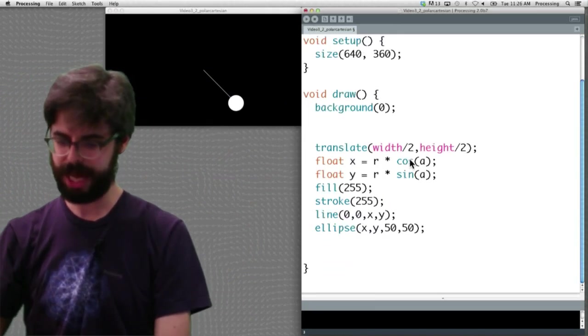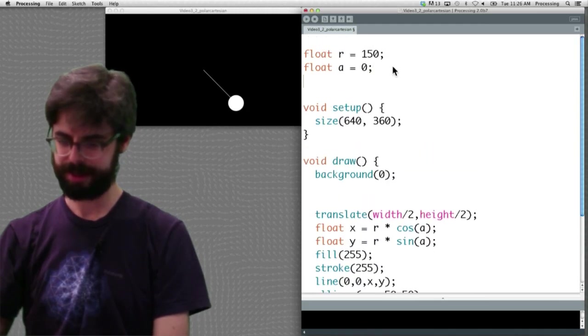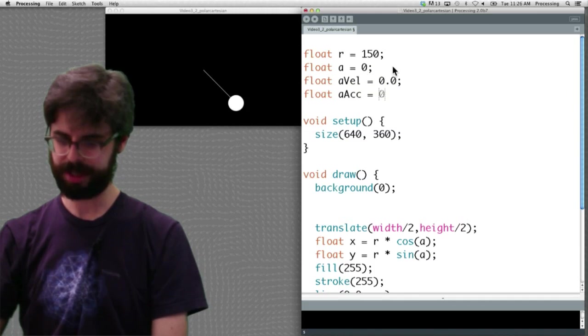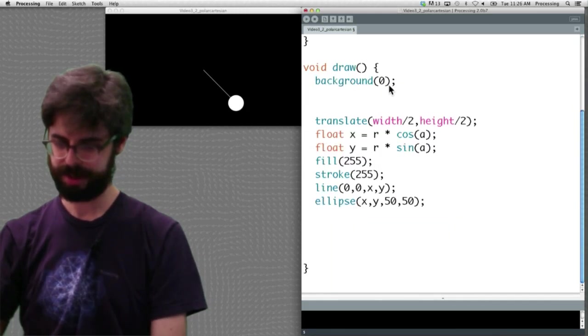It's a radius of 150 and an angle of 0. What if I change the angle to pi divided by 4? There we can see, it's 45 degrees rotated. And what if I do something like say, hey, let's apply angular velocity, angular acceleration.